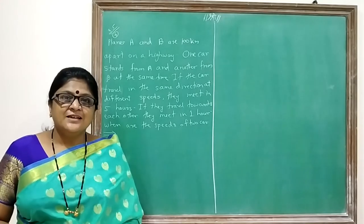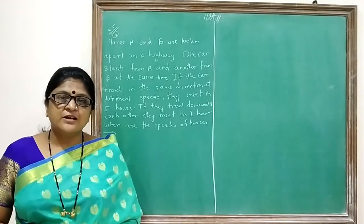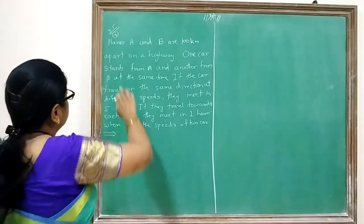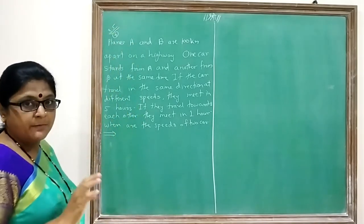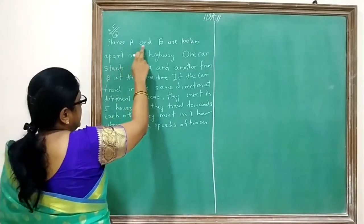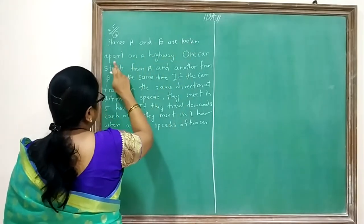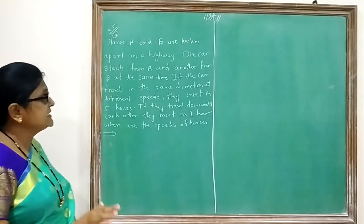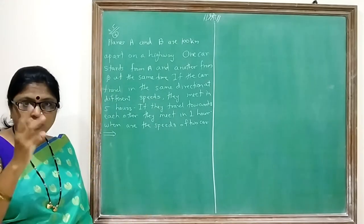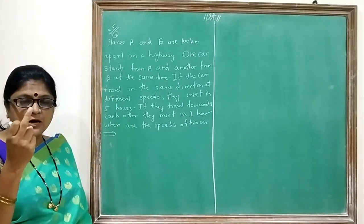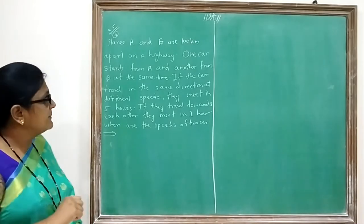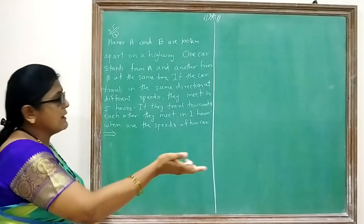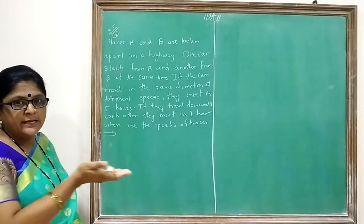Hello students. In this lecture we are going to see linear equations of two variables. Example 3.54: Points A and B are 100 km apart on a highway. There are two points — one is A and the second is B — and they are 100 km apart.